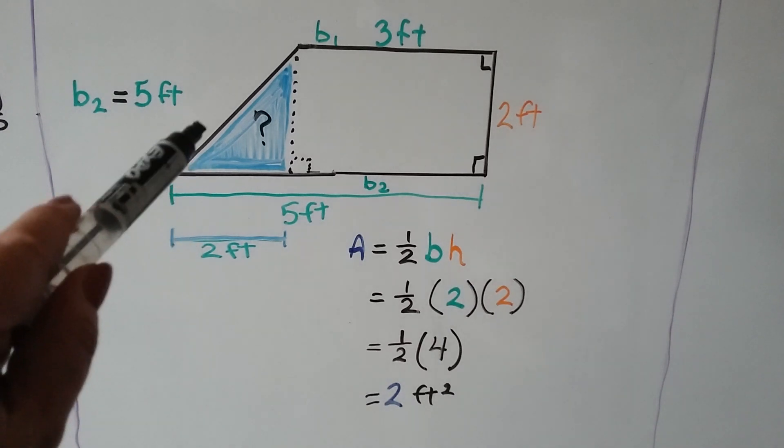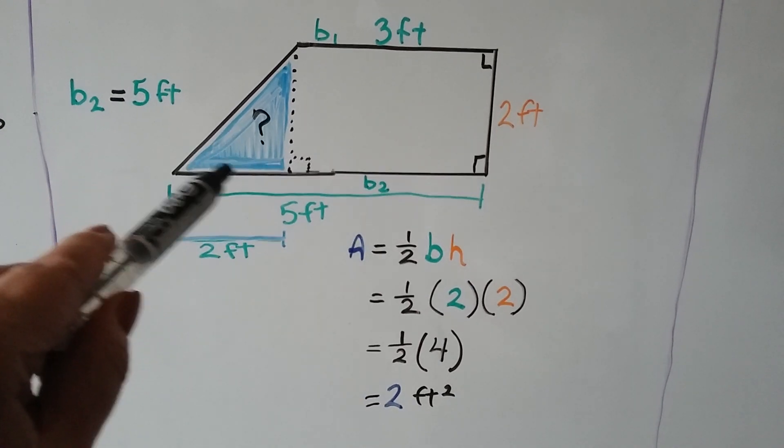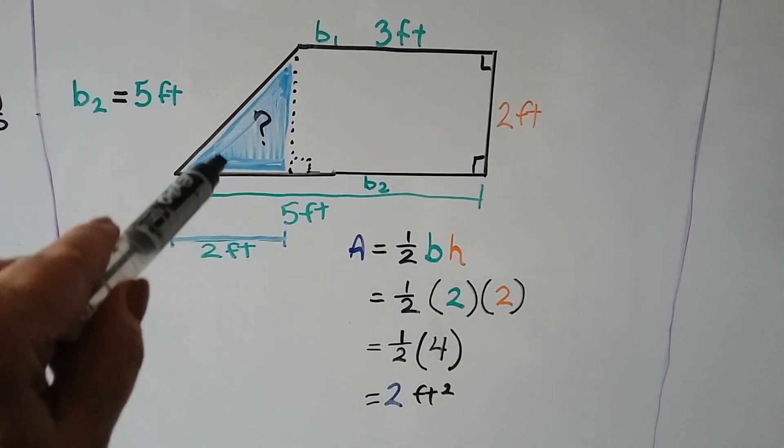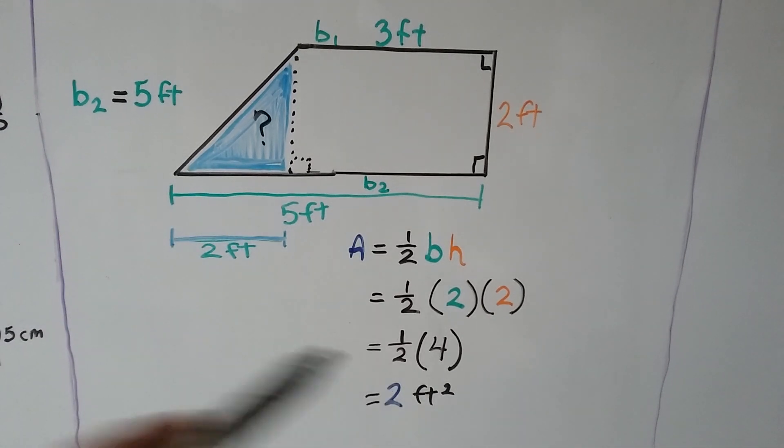We could even go one step further if it wanted us to find only this area of the triangle. If this was split in half here and it just wanted this area, we could divide that by 2.